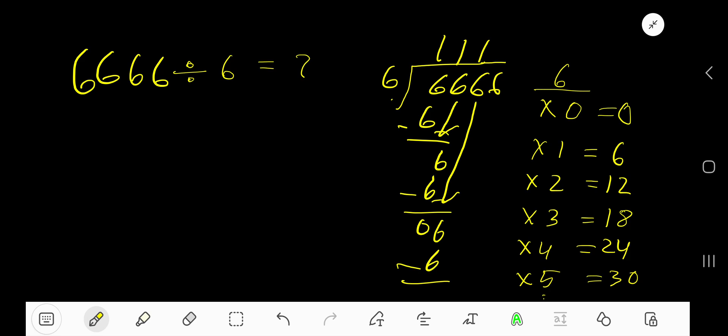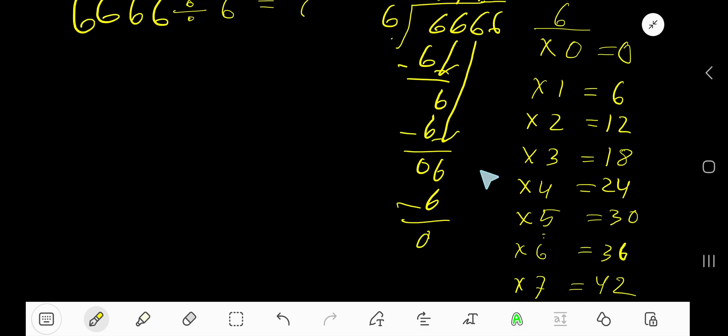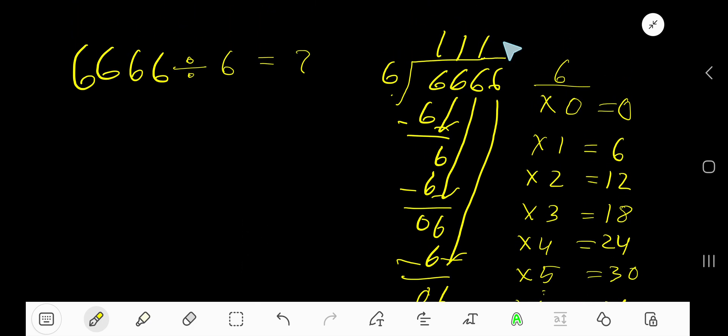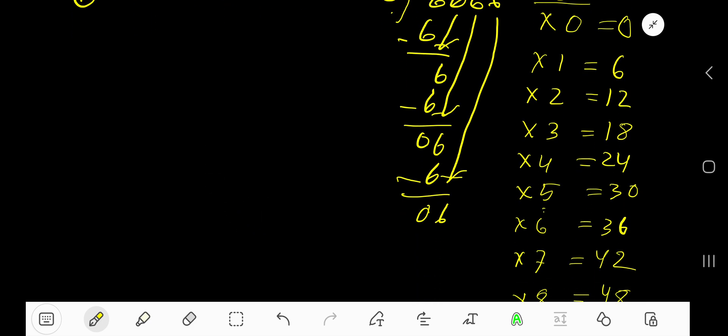One times 6 is 6. Subtract - we are getting zero. Bring down this 6. 6 goes into 6 again one time. One times 6 is 6, subtract 0.